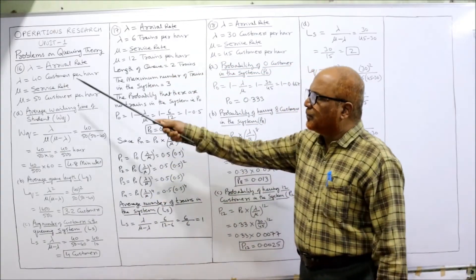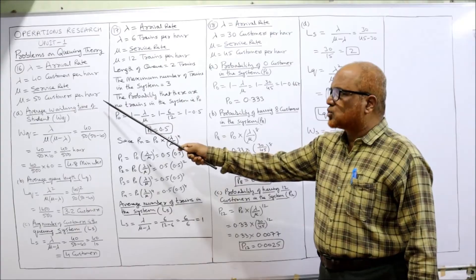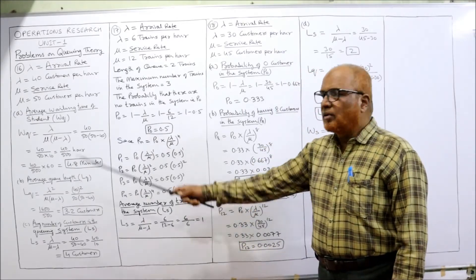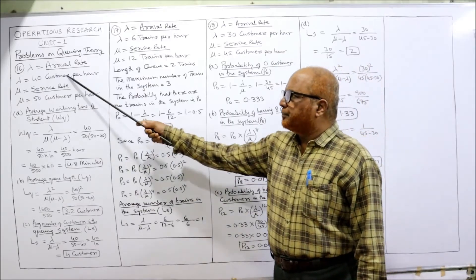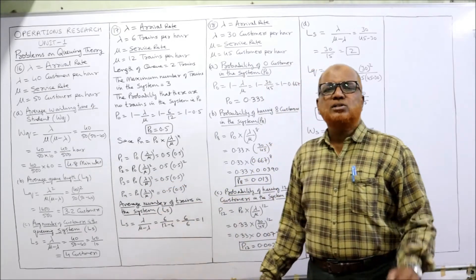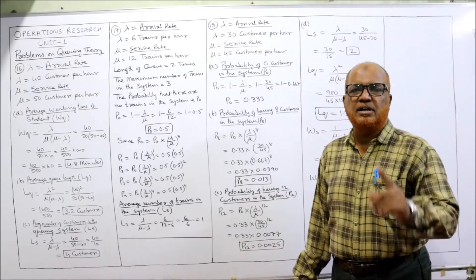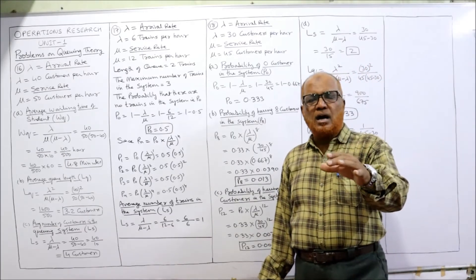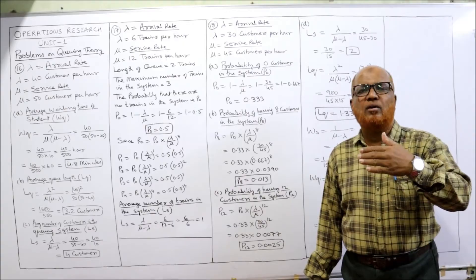First, we write down λ = 40 students per hour and μ = 50 students per hour. For average waiting time in the queue, WQ, the formula is λ divided by μ times (μ minus λ). Substituting: 40 divided by 50 times (50 minus 40) = 40 divided by 500. Since time is in hours, multiply by 60 to convert to minutes: 40 by 500 into 60 gives 4.8 minutes. That is the average waiting time of the student in the queue.